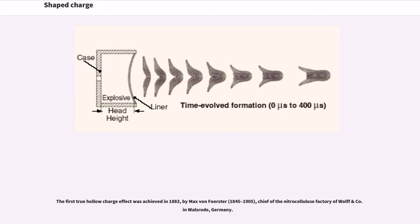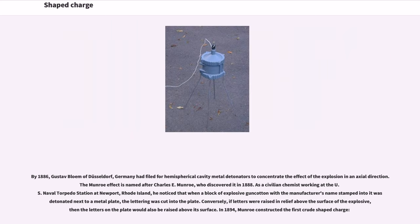The first true hollow charge effect was achieved in 1883 by Max von Förster, chief of the nitrocellulose factory of Wöhlk & Co. in Walsrode, Germany. By 1886, Gustav Bloem of Düsseldorf, Germany had filed for hemispherical cavity metal detonators to concentrate the effect of the explosion in an axial direction. The Monroe effect is named after Charles E. Monroe, who discovered it in 1888.